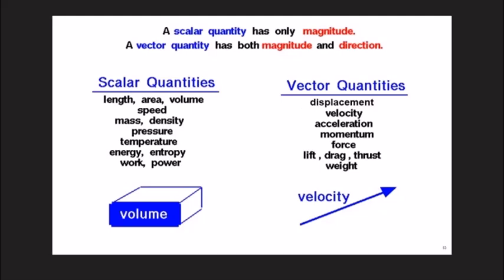A vector quantity is one that is expressed completely only when both a magnitude and a direction are given. For example, if I say a girl's displacement was 30 kilometers towards the south, then 30 kilometers is the magnitude and south is the direction — both are mentioned, so this is a vector quantity.